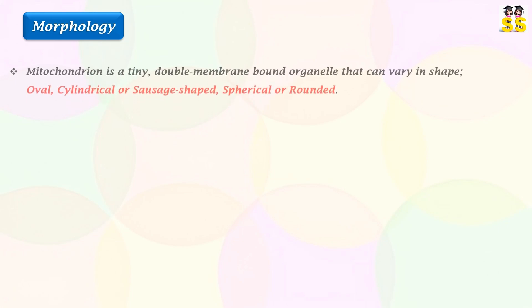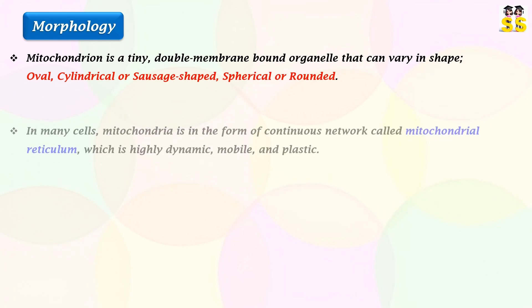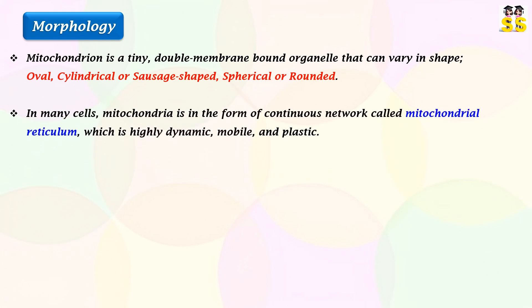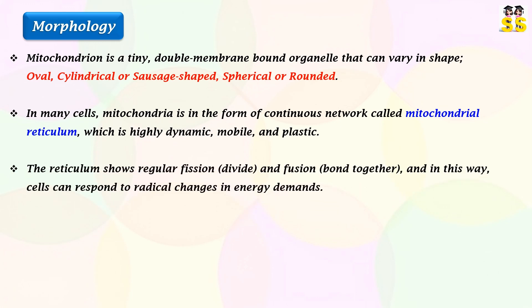Coming to the morphology of mitochondria. The mitochondrion is a tiny organelle enveloped by two membranes. Although mitochondria are often pictured as oval-shaped organelles, they can vary in shape and appear cylindrical or sausage-shaped, or spherical or rounded. In many cells, mitochondria exist in the form of an extensive network called mitochondrial reticulum, which is highly dynamic, mobile, and plastic. The reticulum shows constant fission and fusion.